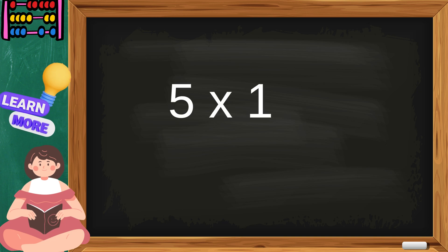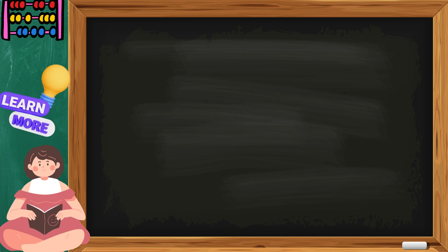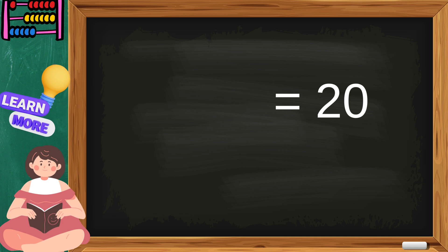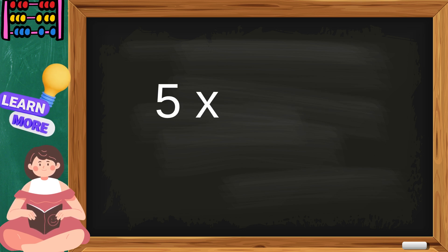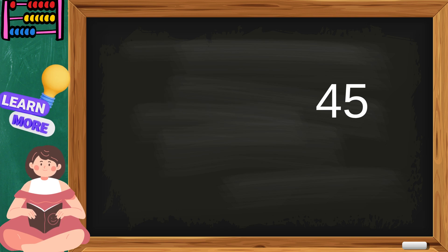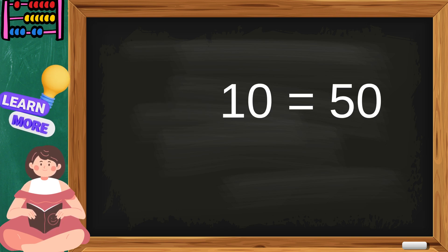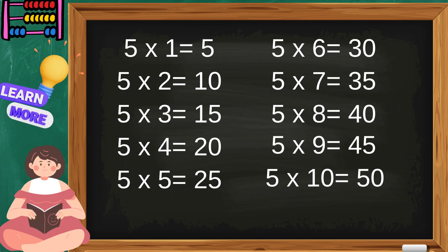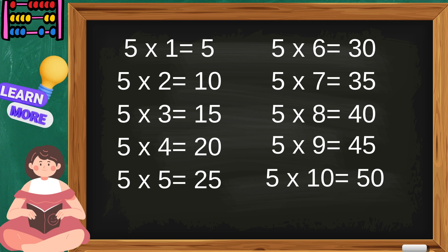Five ones are five, five twos are ten, five threes are fifteen, five fours are twenty, five fives are twenty-five, five sixes are thirty, five sevens are thirty-five, five eights are forty, five nines are forty-five, five tens are fifty. Sing with me children, the table of five.